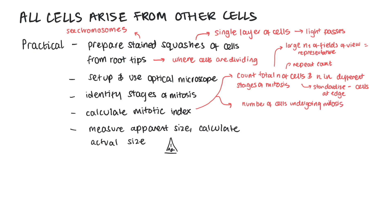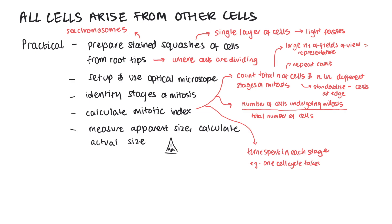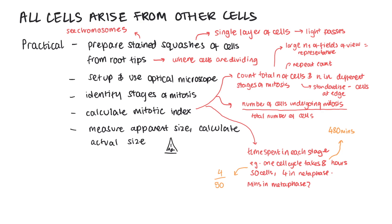You can also be asked to calculate the time spent in each stage of the cell cycle. For example, you'd be given information such as: one cell cycle takes eight hours, there are 50 cells, and four of these cells are in metaphase — how many minutes do they spend in metaphase? We calculate the proportion of cells in metaphase: divide the number in metaphase (4) by the total number of cells (50), then multiply by the length of the cell cycle in minutes (8 hours = 480 minutes). So 4 divided by 50, multiplied by 480, gives us 38.4 minutes in metaphase.